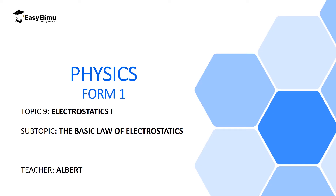To obtain a negatively charged material, we add electrons to that material. Since the number of protons has not changed, there will be more electrons than protons, and that material will be said to be negatively charged. In this lesson we are going to discuss how positive charges and negative charges interact in what we call the basic law of electrostatics. My name is Albert, and I hope you will enjoy this video.